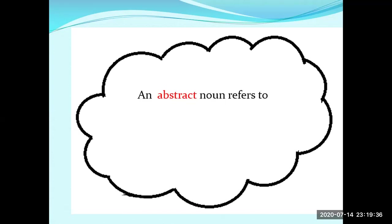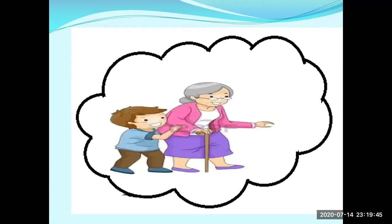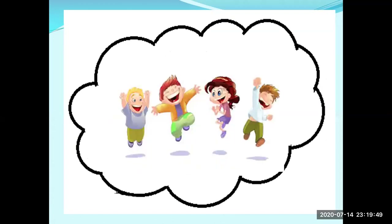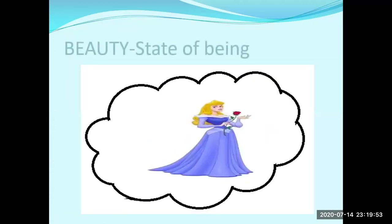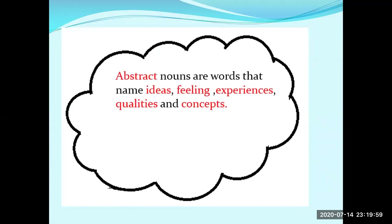An abstract noun refers to qualities, actions, and states of being. For example, kindness is a quality, laughter is an action, and beauty is a state of being. In short, abstract nouns are words that name ideas, feelings, experiences, qualities, and concepts.